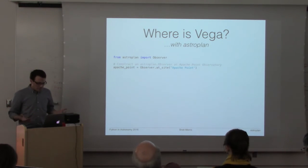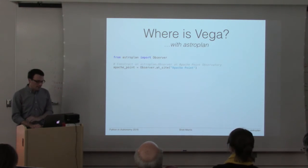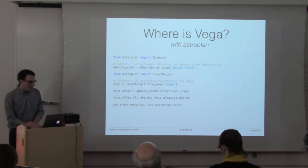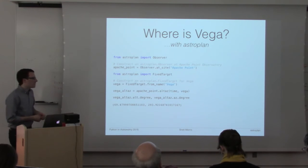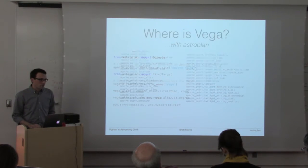Let's ask a really simple question: where is Vega from Apache Point Observatory where I do most my work? There's an observer class which knows about a bunch of observatories and we'd love for you to contribute the observatory that you use most often to AstroPy so that you can pull that in and then you can define a target to observe and find out its altitude and azimuth using AstroPlan pretty quickly.